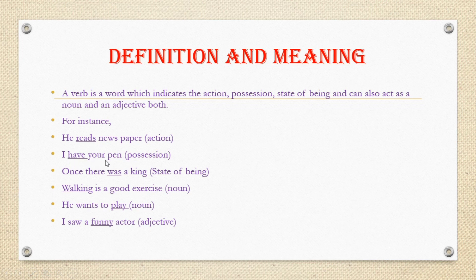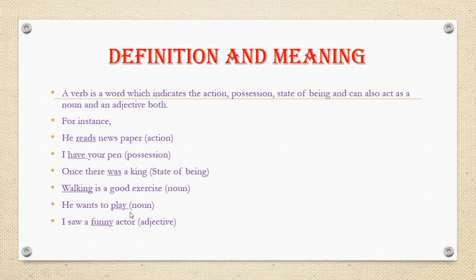'I have your pen' indicates position. 'Once there was a king' indicates a state of being. 'Walking is a good exercise' — here 'walking' functions as a noun. 'He wants to play' — 'play' is also used as a noun. And in 'I saw a funny actor,' 'funny' functions as an adjective.